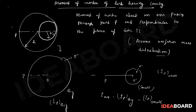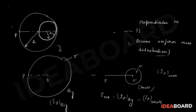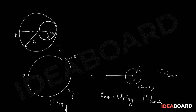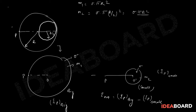Let's remove this part and define the masses. Let us take the big disc mass as M1 and the small disc mass as M2. We know that M1 = σ × π × R². And M2 = σ × π × (R/2)² = σπR²/4. This is going to be the mass of the small disc.